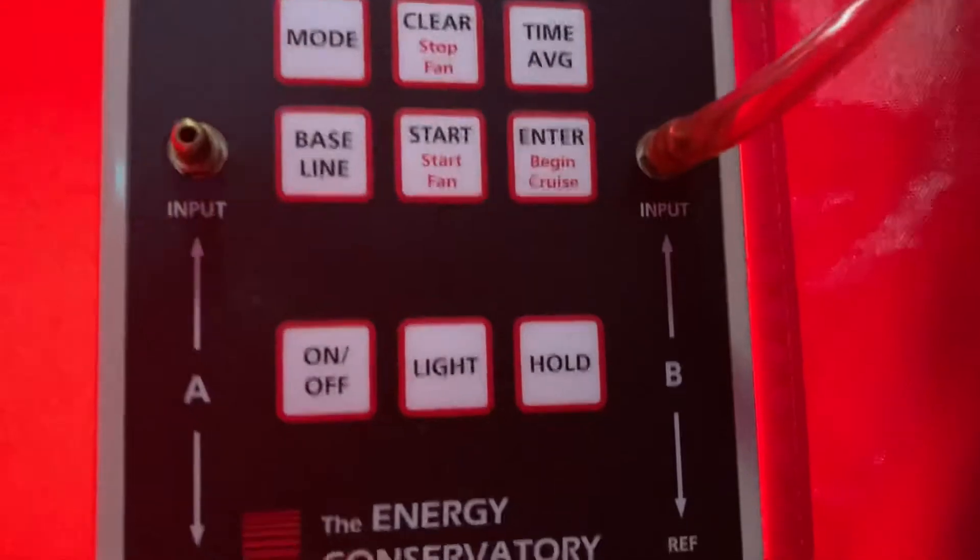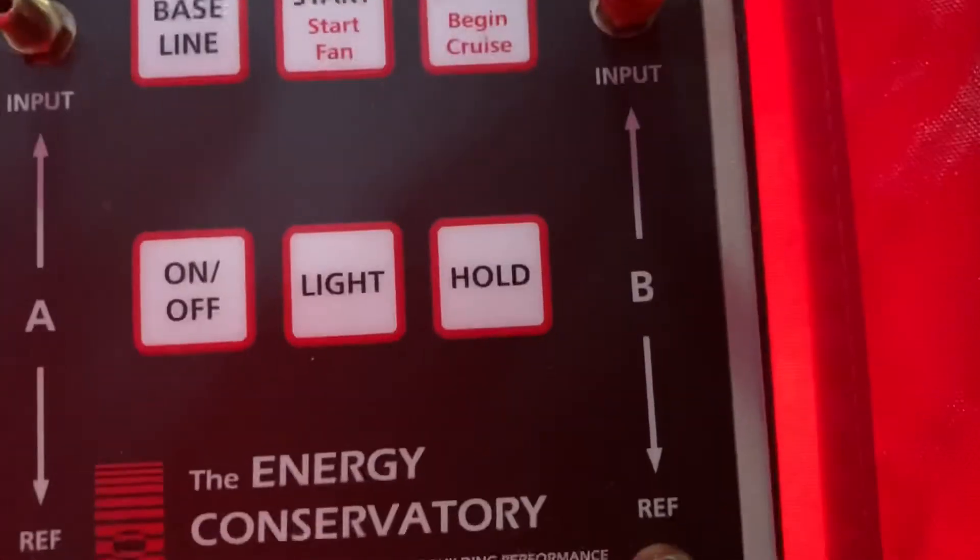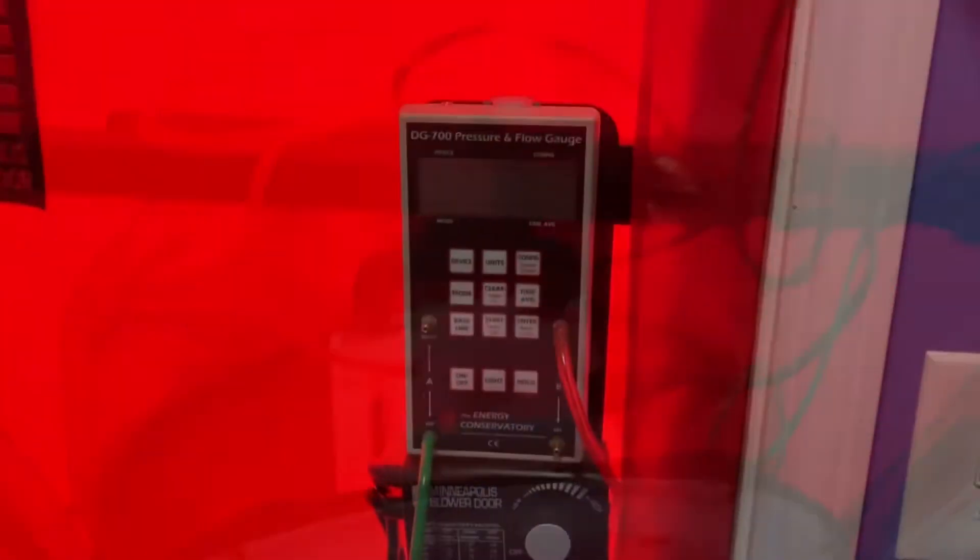On the B side we want the red hose connected to the input channel, and that'll run down and get connected to the input port on the fan right there. That is your hose setup.